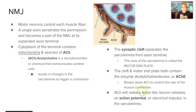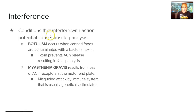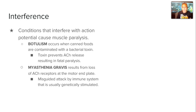ACH will only release if there is an electrical impulse — what is known as an action potential — that the neuron releases. If there is interference of this, some conditions may occur. One is botulism, which is caused by a bacterial toxin that can be found in canned foods. Clostridium toxin prevents the ACH release, which results in fatal paralysis.